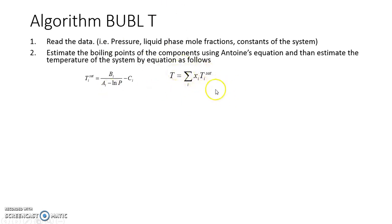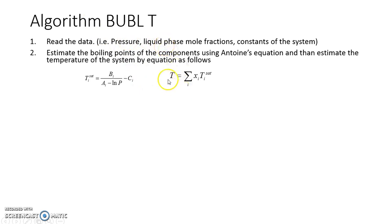There is no strict rule that you must do this — you can always assume a temperature randomly — but using Antoine's equation gives a better initial estimate. Now with fixed pressure, fixed liquid phase mole fractions, and the assumed temperature, we can calculate both vapor pressures.